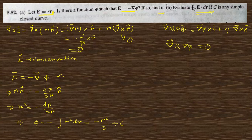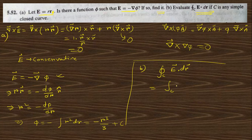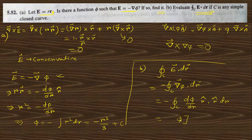Now for part (b), we need to find the closed line integral of E dot dr for a simply closed curve. Since E = -grad phi, the integral becomes the closed integral of grad phi dot dr. Noting that grad phi = (d phi/dr) r cap and dr = r cap dr, this reduces to the closed integral of d phi, and since the upper and lower limits are the same, this becomes 0.